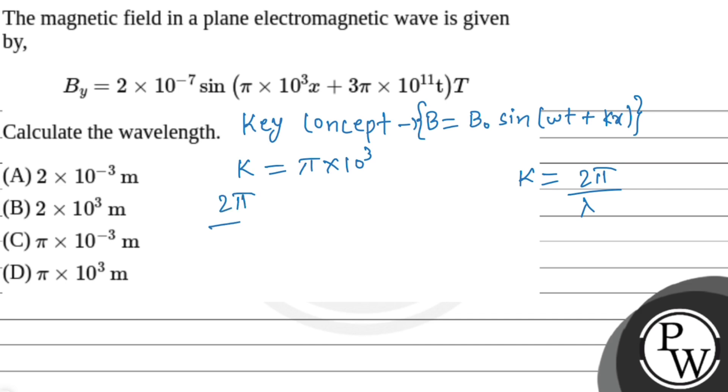2pi upon lambda will be equal to pi into 10 to the power 3. On calculating, lambda equals 2pi upon pi into 10 to the power 3.